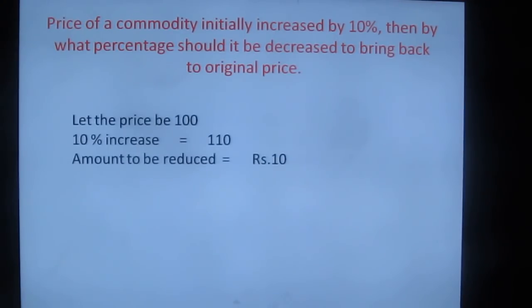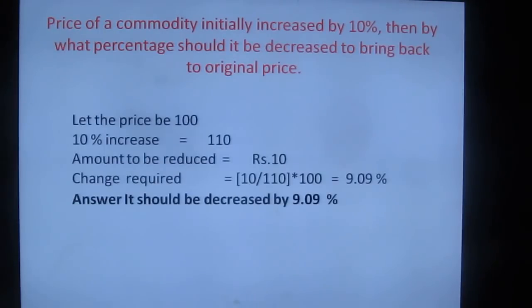But the amount to be reduced is rupees 10. So what is the percentage to be decreased? So 10 rupees should be decreased from 110. That is 10 by 110 into 100, that is 9.09%. So answer is 9.09%. What is the shortcut here you can learn? If the price of the commodity is increased by 10, it should decrease less than that. Check out which options are less than 10%, that should be the answer.